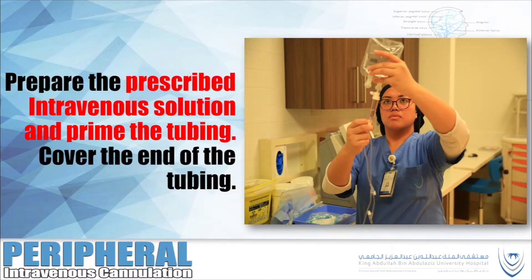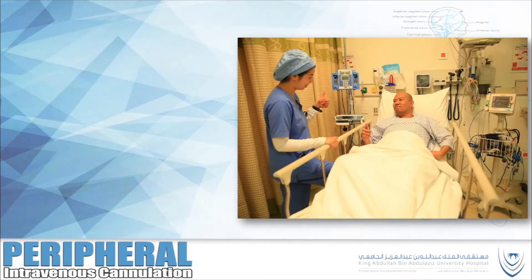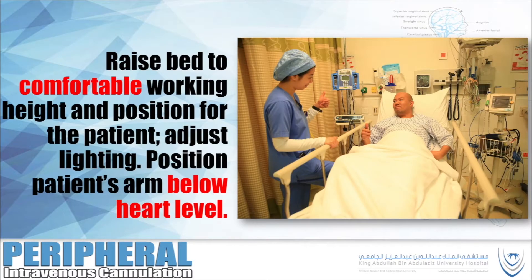Prepare the prescribed intravenous solution and prime the tubing. Cover the end of the tubing. Raise the bed to a comfortable working height and position for the patient. Adjust lighting and position the patient's arm below heart level.